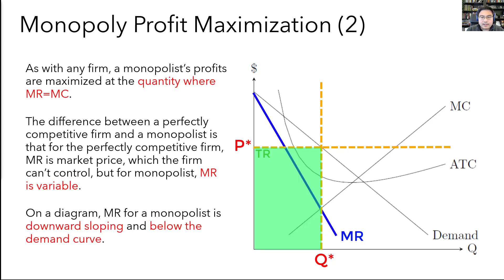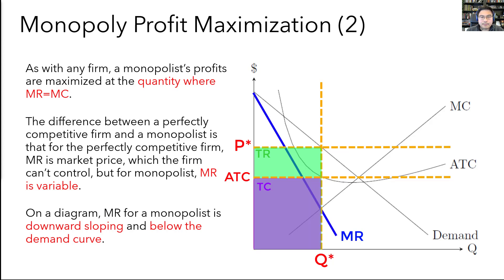We can use this graph to figure out what the monopolist's profits are. Since price is here and quantity is here, the monopolist's total revenue is P times Q, so that's this rectangle. This is going to be the average total cost at that quantity, and total cost is the average total cost times Q, so that's this rectangle. The difference between these two rectangles gives us the total profit for the monopolist.